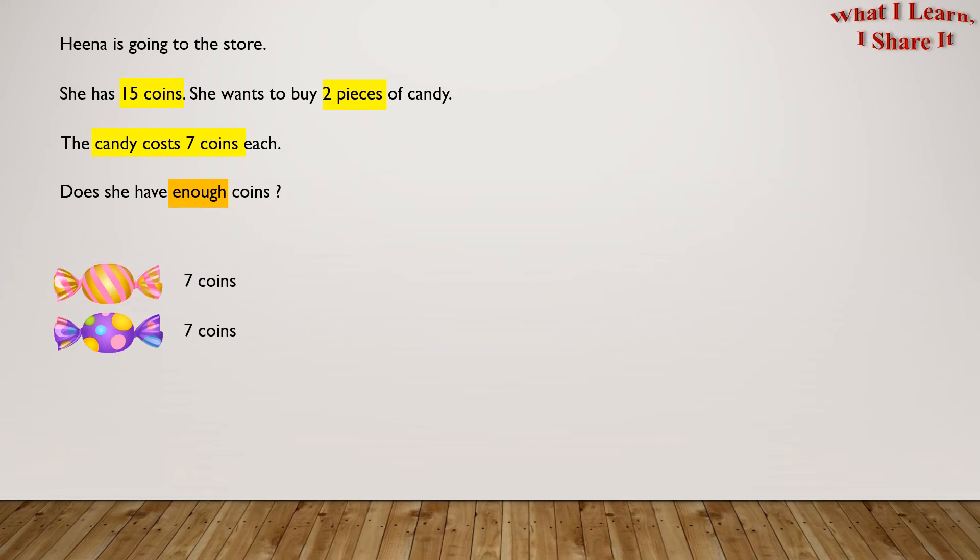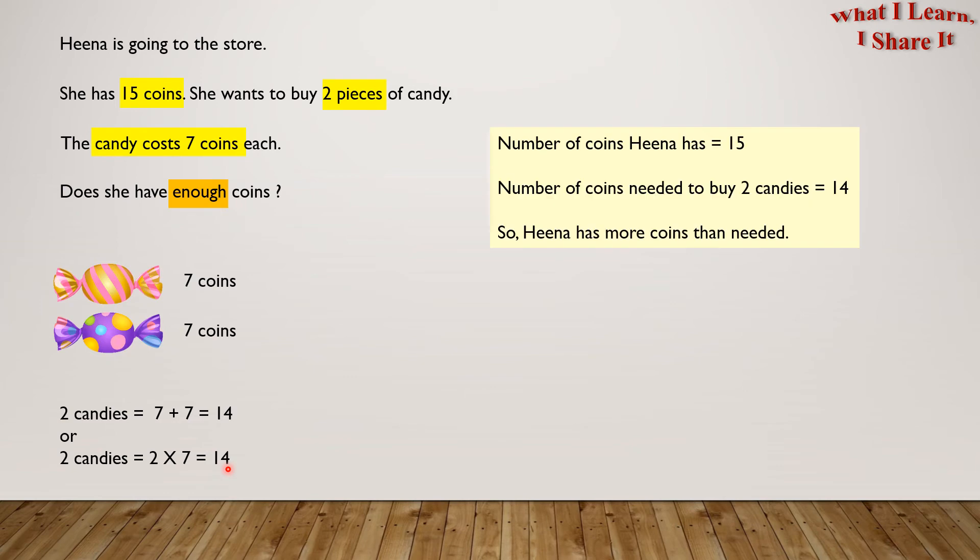Let's find out the number of coins needed for the 2 candies. 2 candies equals 7 plus 7 equals 14. Or the 2 candies equal 2 times 7 equals 14. Number of coins Hina has equals 15. Number of coins needed to buy the 2 candies equals 14. So Hina has more coins than needed.